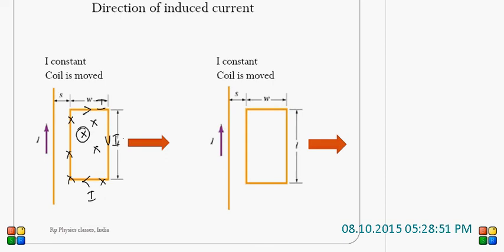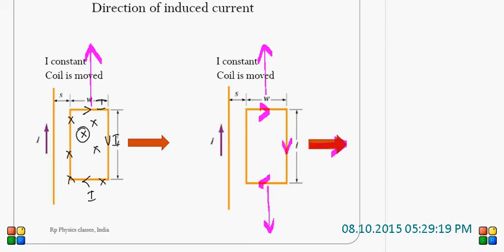It is in accordance with the law of conservation of energy. If the same coil is moved in the perpendicular direction, there won't be any change in flux, and there won't be any induced current. When you move it along the x-axis, then only there will be a change in flux. Similarly, if the coil is moved along the other axis — moved down or up — there is no induced current. There will be induced current, in the clockwise direction, only if you move it towards the right.